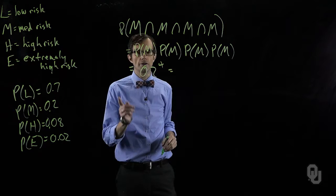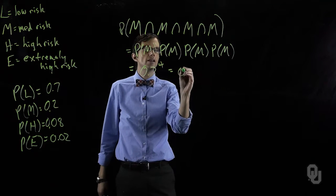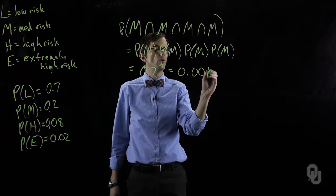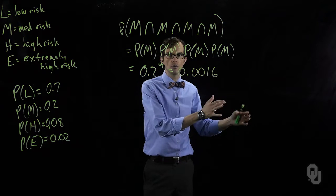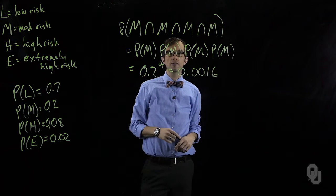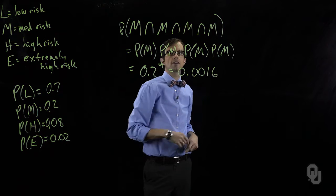We work that out and that is 0.0016. So the probability that we have four projects in a row and all four of them are medium risk is 0.0016.